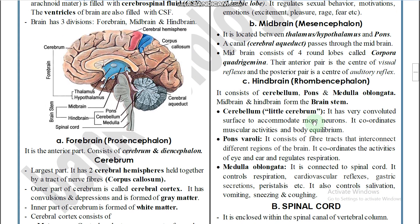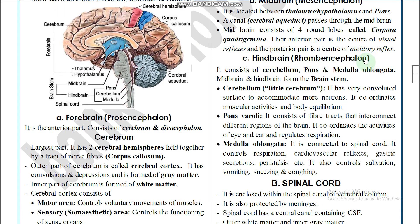The hindbrain, or rhombencephalon, consists of the cerebellum, pons varoli, and medulla oblongata. The cerebellum is called the 'little brain'; it has a highly convoluted surface to accommodate more neurons and coordinates muscular activities and body equilibrium. Pons varoli consists of fiber tracts that interconnect different regions of the brain and coordinates activities of the eye and ear.